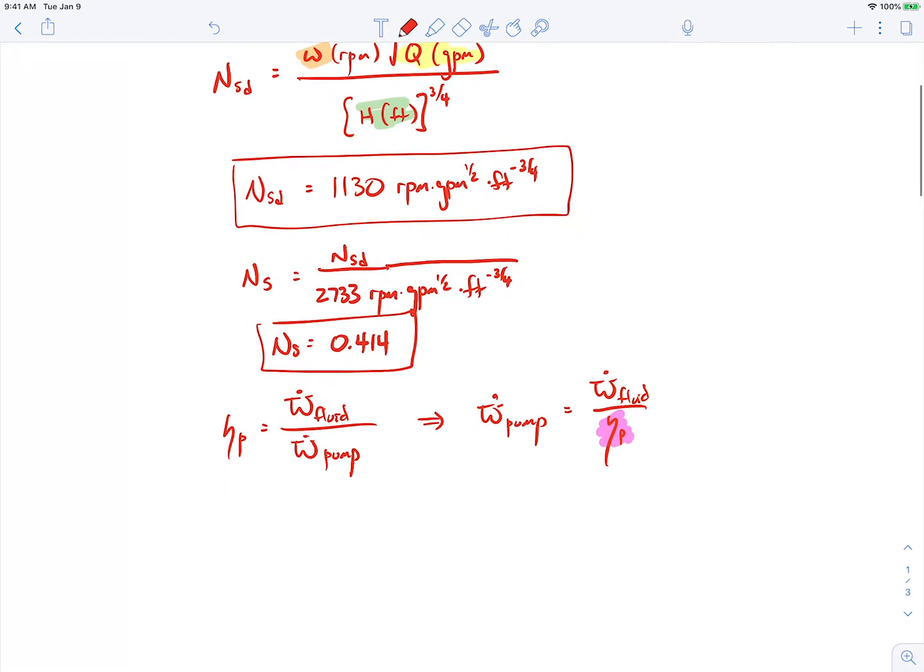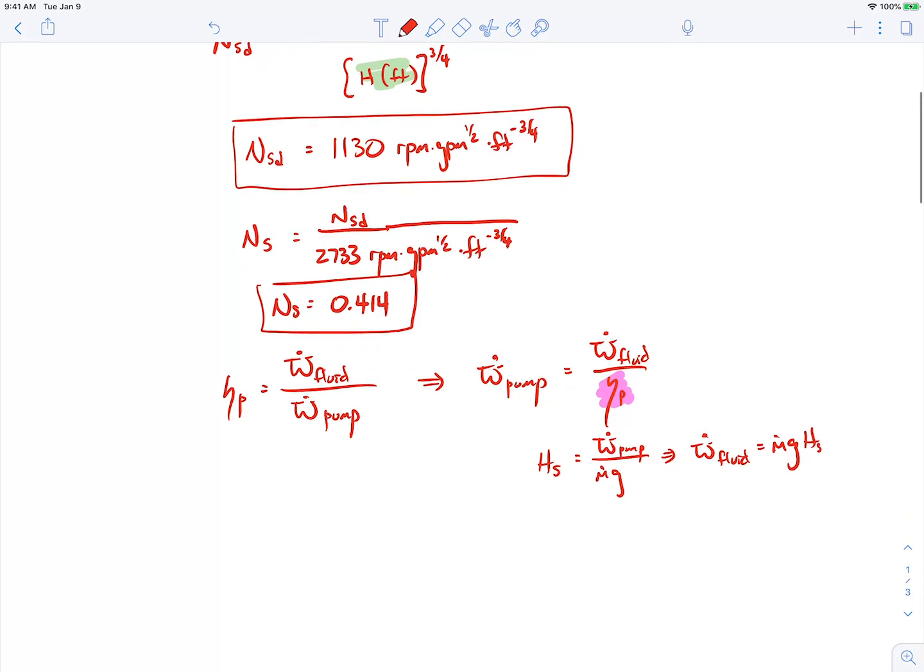To find the power that goes into the fluid, we can just go back to our expression for the shaft head. Remember shaft head is the power that gets into the fluid divided by the mass flow rate of the fluid through the pump times gravity. We can just rearrange that to solve for the power that makes it into the fluid. So this is the head rise of the fluid, mass flow rate, gravity.